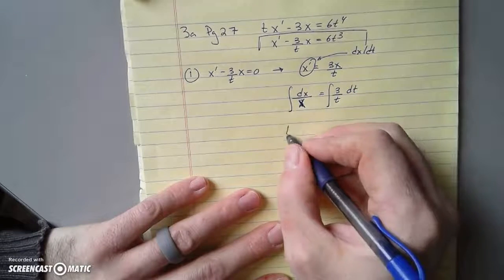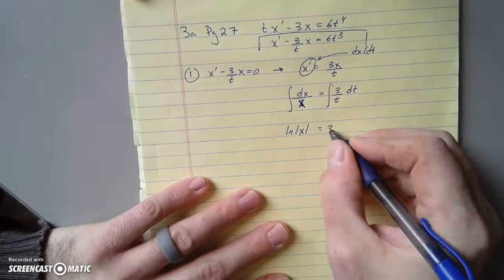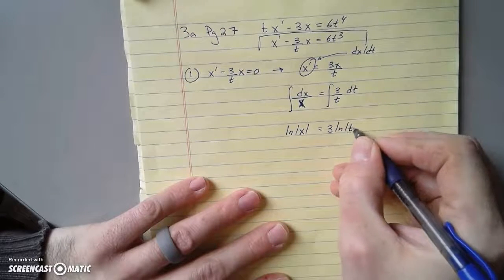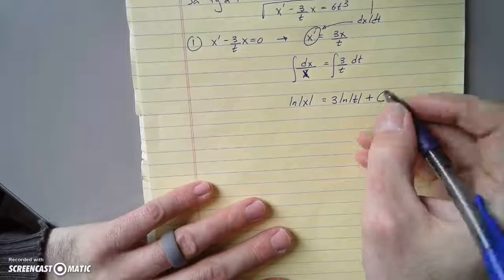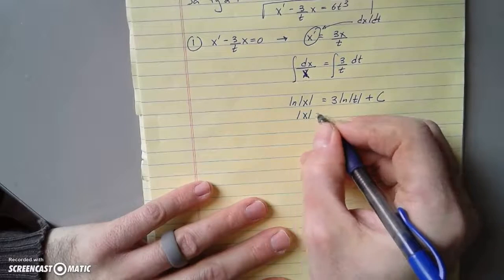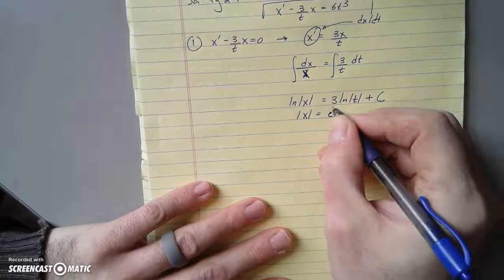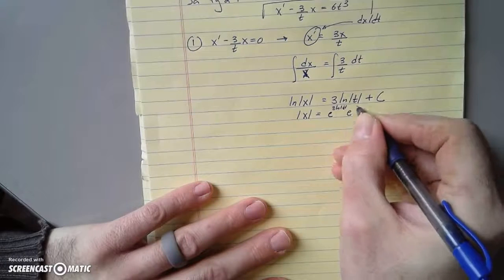Integrate both sides. We get a log of absolute value of x on the left. We get a 3 ln absolute value of t plus c. Don't forget the constant.